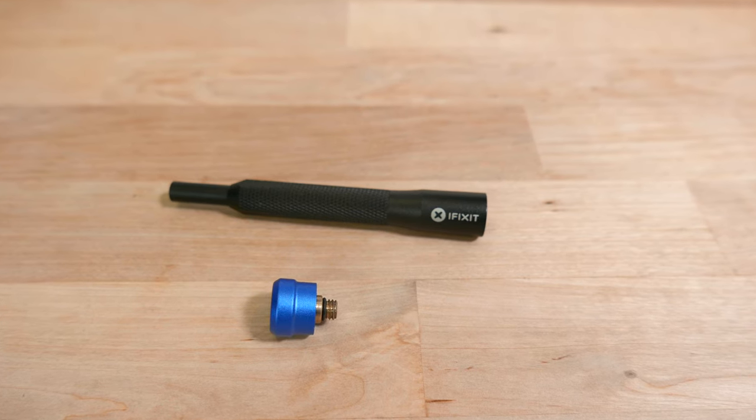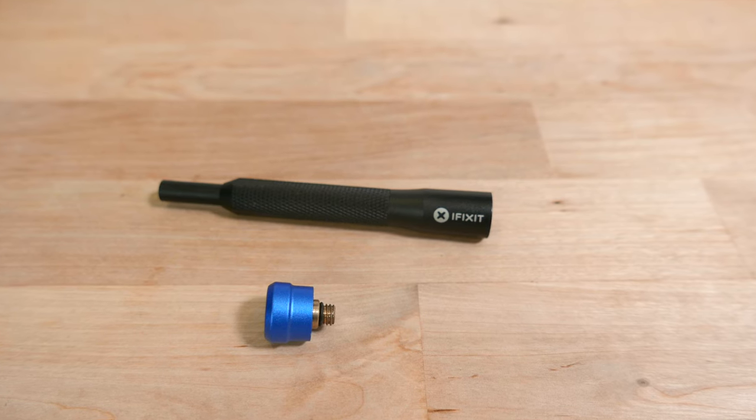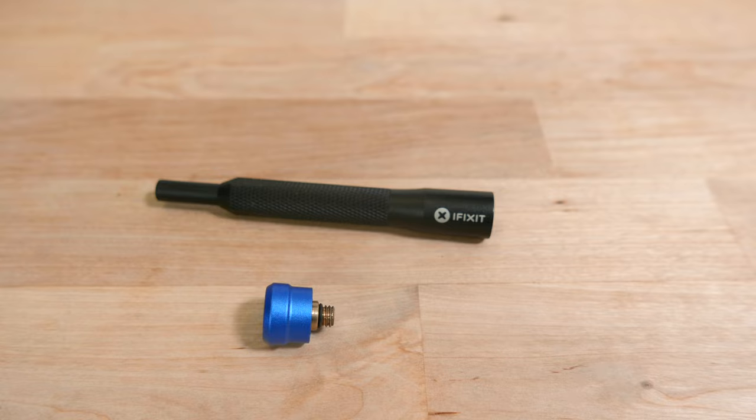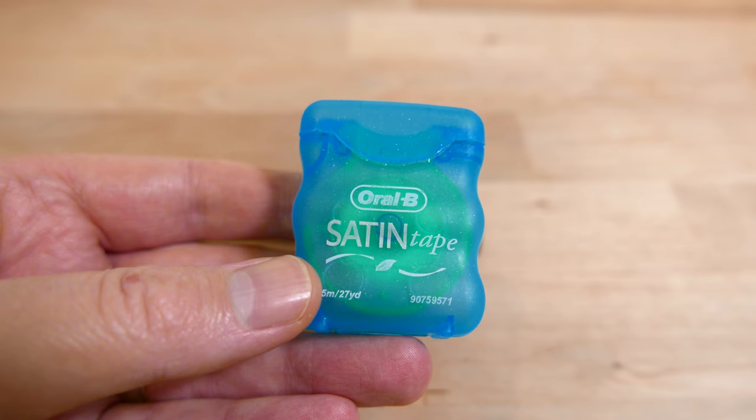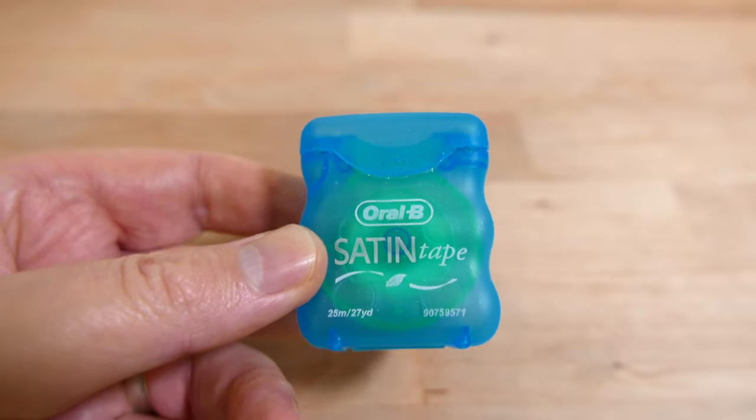You can't just screw it back on without help because it's designed to rotate freely, so you need something with grip to hold the central metal column in place while you screw it in. The best thing to use for this is dental floss since it's grippy and it can easily be wrapped around.